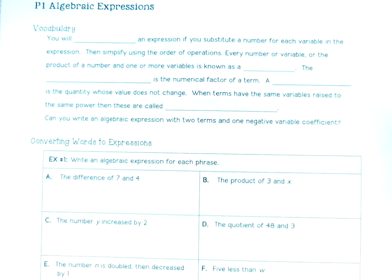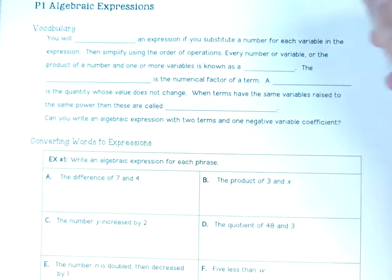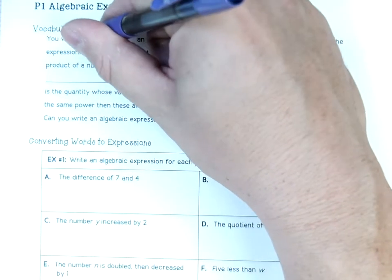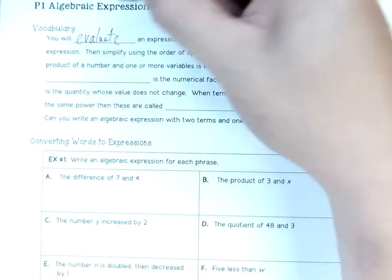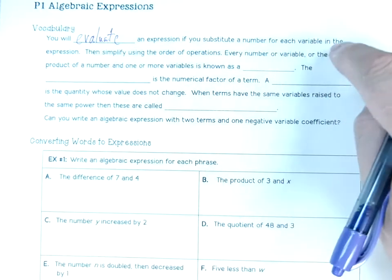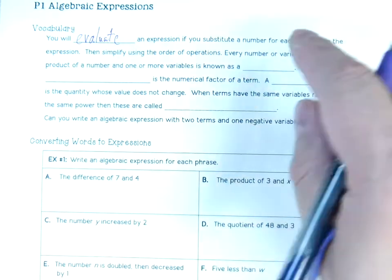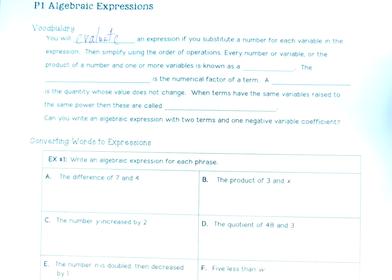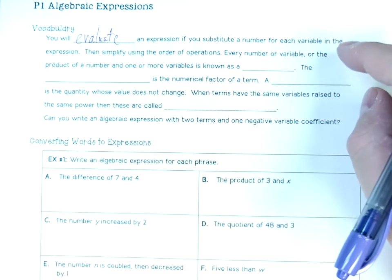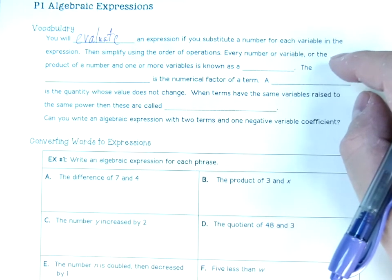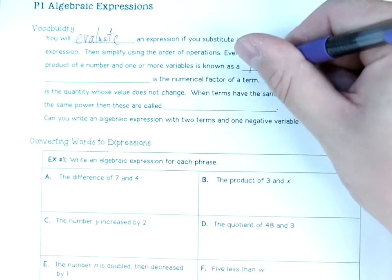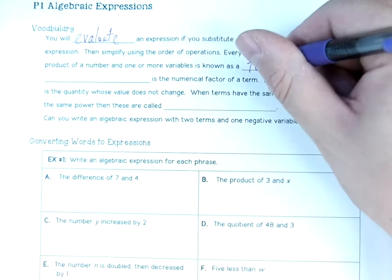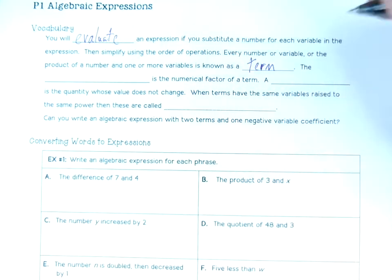Vocabulary today, part one: algebraic expressions. You will evaluate an expression — this is the keyword — if you substitute a number for each variable in the expression, then simplify using the order of operations. Every number, variable, or the product of a number and one or more variables is known as a term. Terms are numbers with variables or just variables.